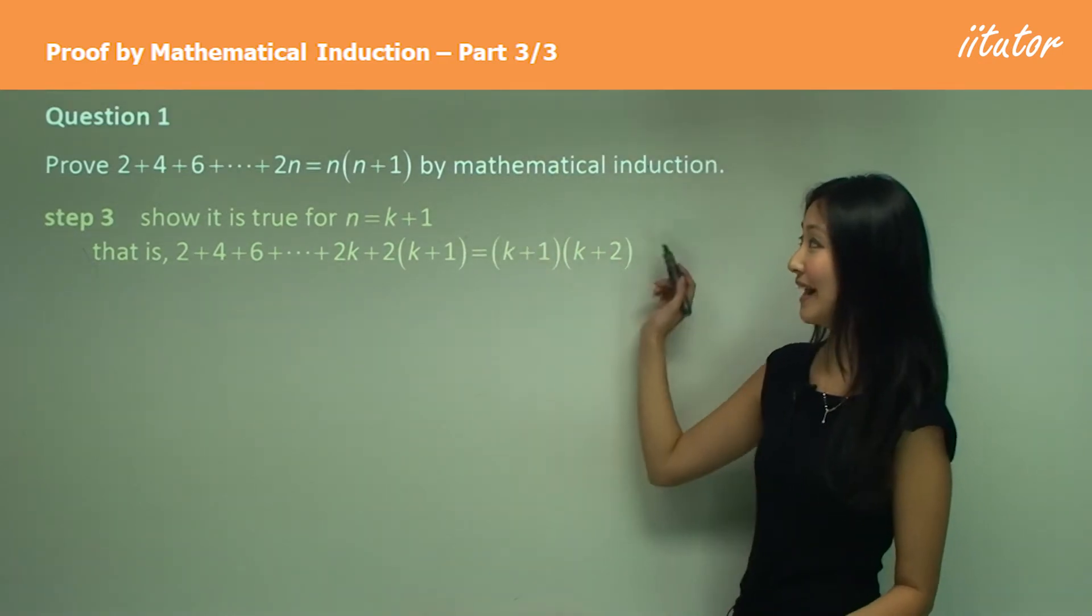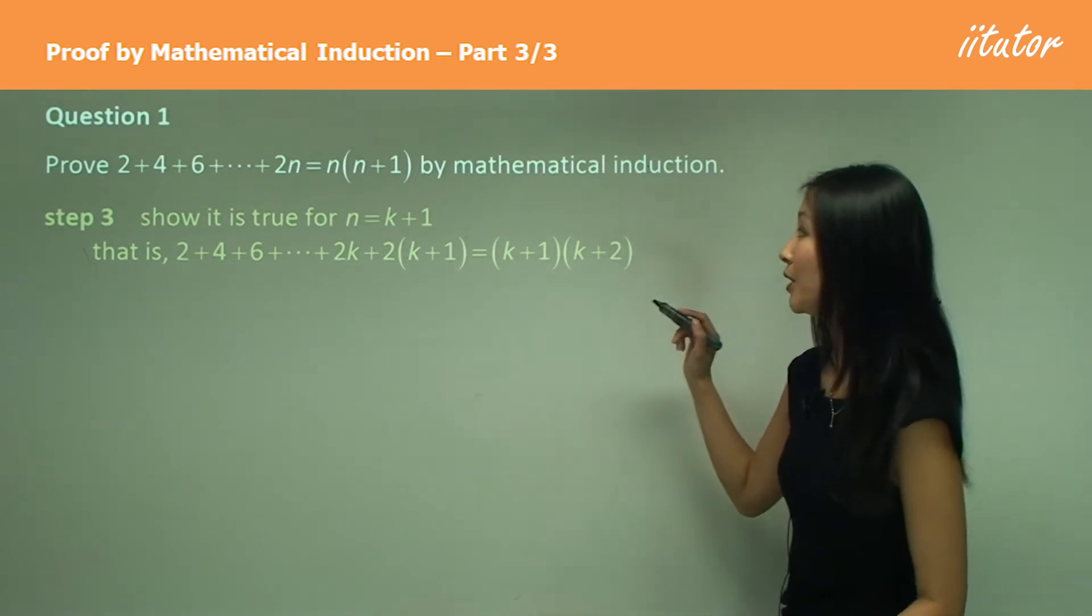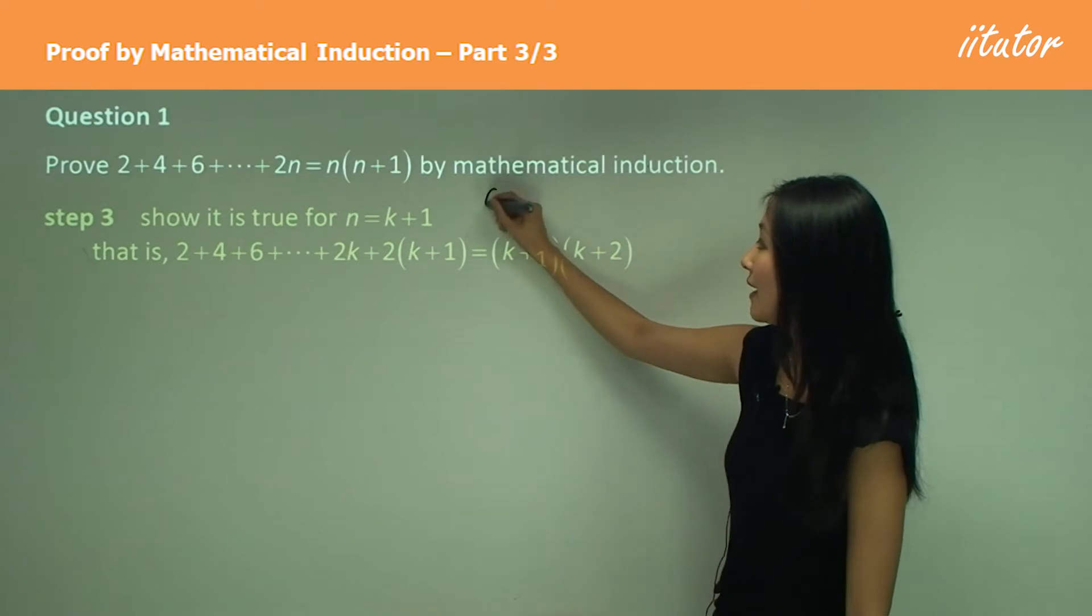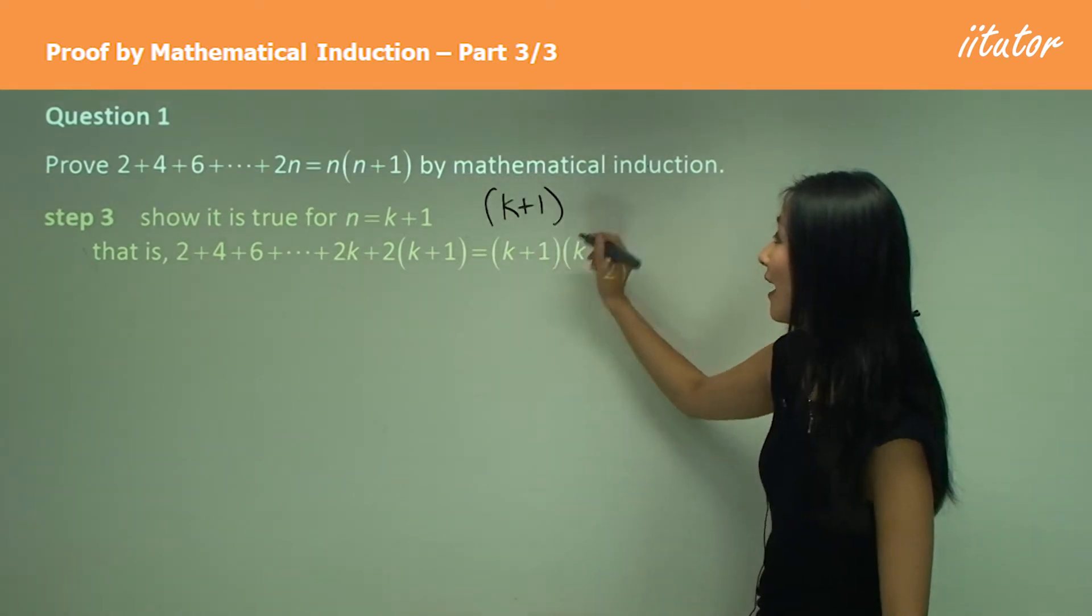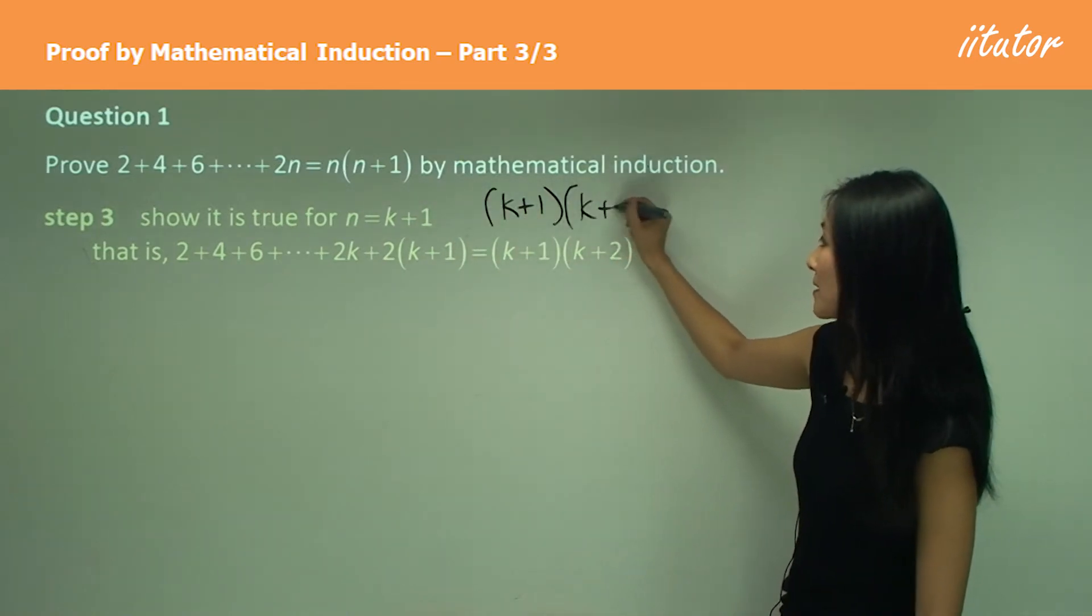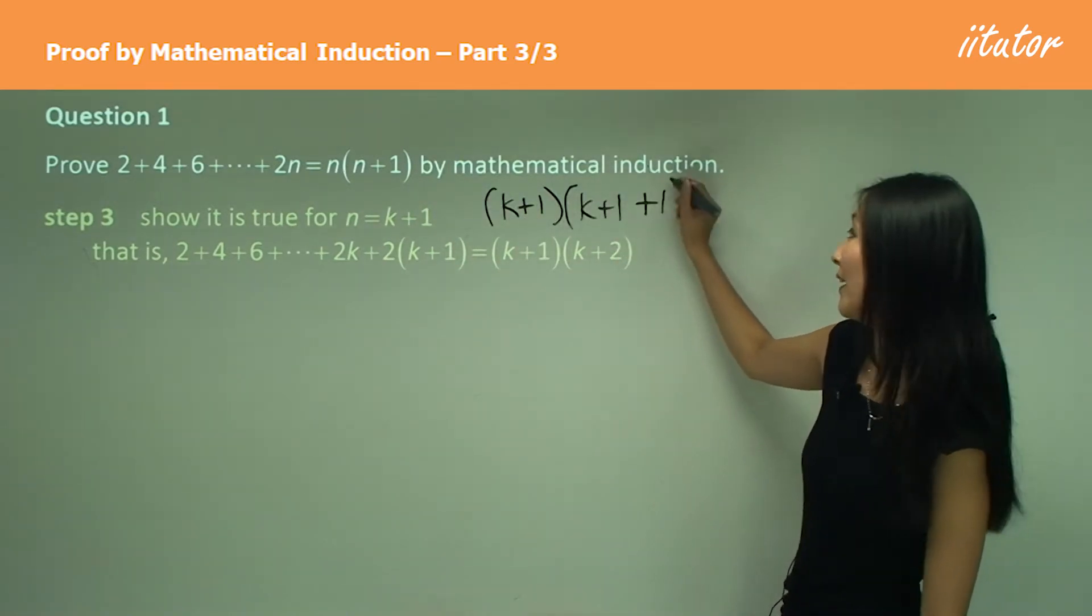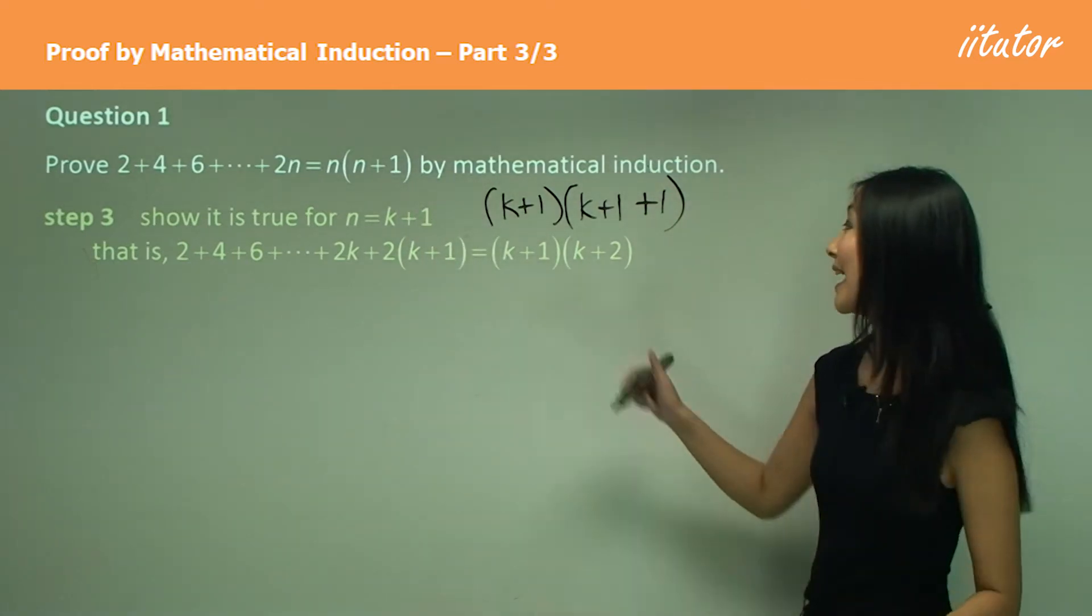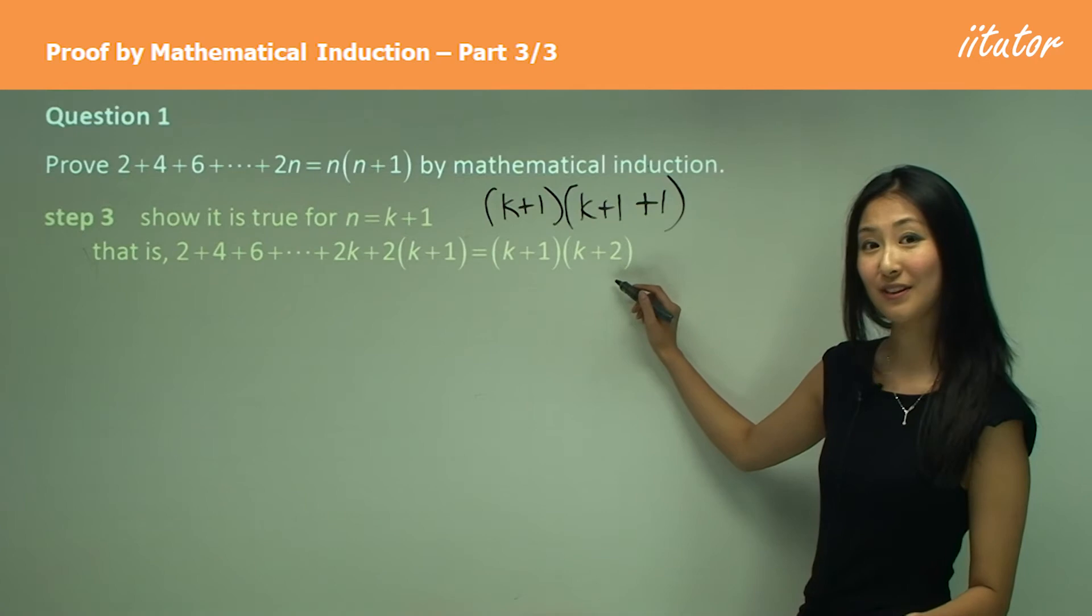And how do I get the right hand side? Well, I'm just substituting k plus 1 into this equation here. So instead of n, I've written k plus 1. And instead of n plus 1, I have k plus 1 and then plus 1 again for this over here. And then summarizing that, we get k plus 1, k plus 2.